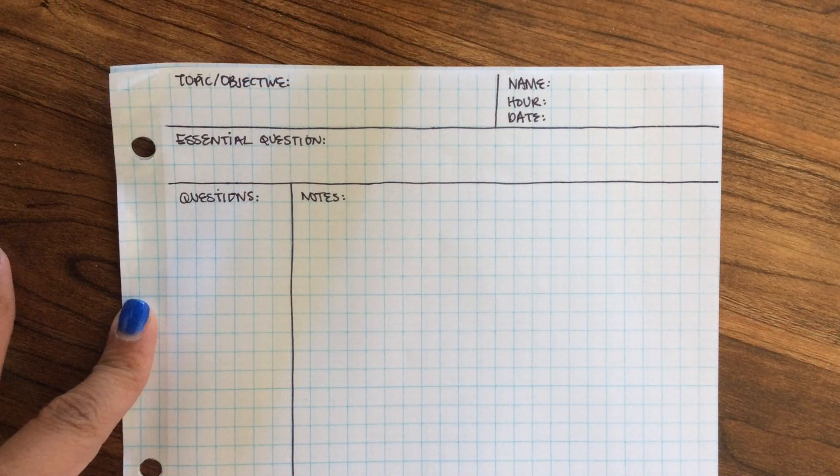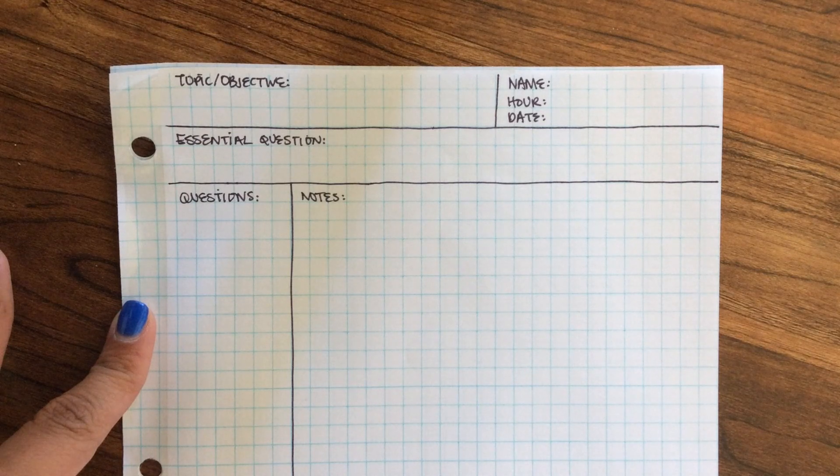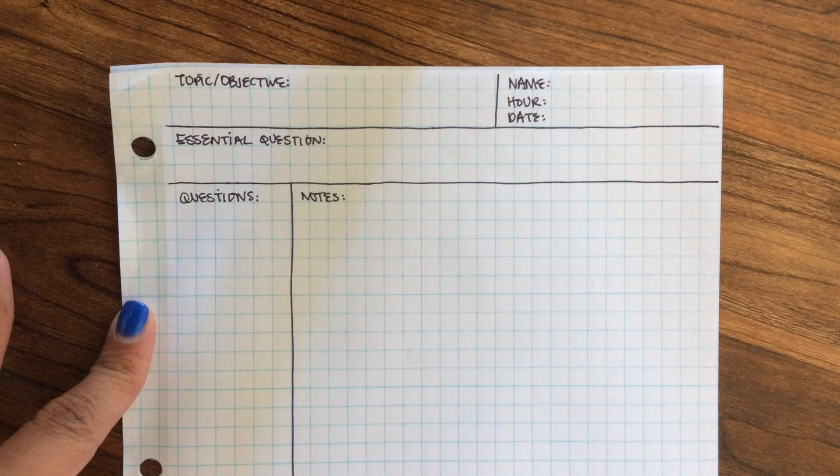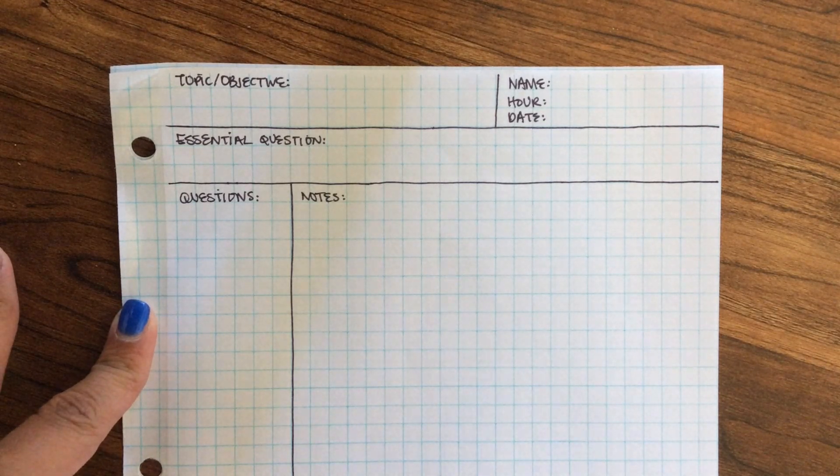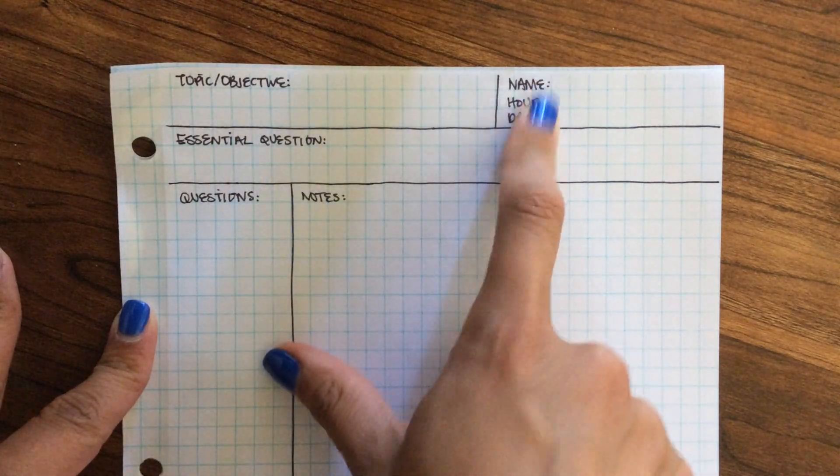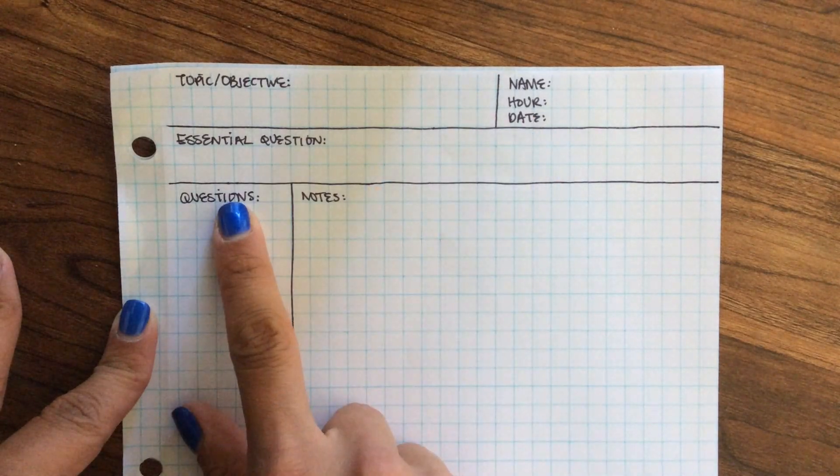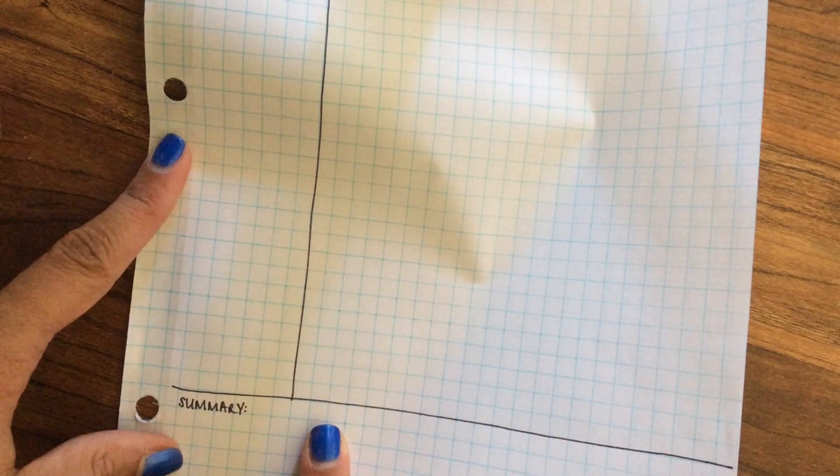Alright, so we are going to be talking about how to set up our focus notes paper so that it looks like this for AP World History. Now, you're going to notice that we have a topic and objective box. We're going to have a place for you to put your information in case you ever lose these papers or hand them in, your essential questions, notes, and then at the very bottom you are going to have a summary. This summary can also go on the back, but we'll talk about that later.